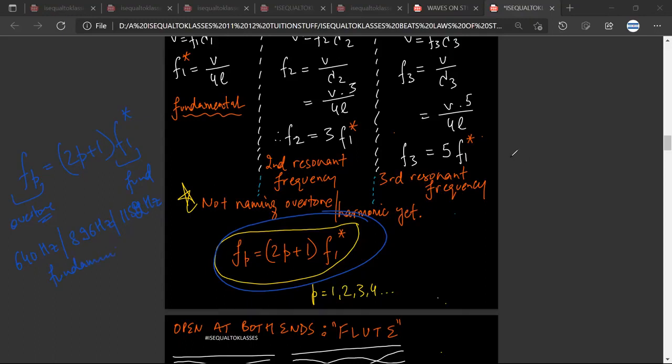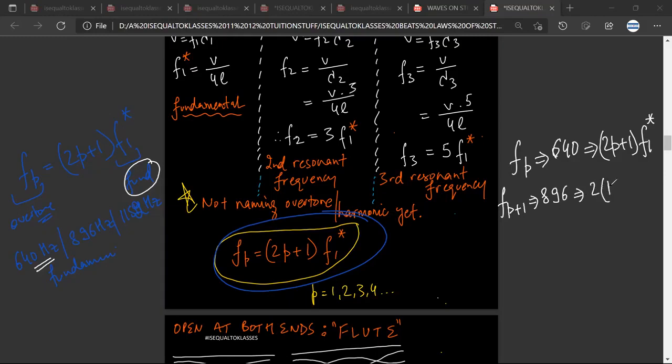So if you don't know which overtone it is, you write that my pth overtone is equal to 640, and that is equal to (2p+1) times f1 star, where f1 star is my fundamental frequency.